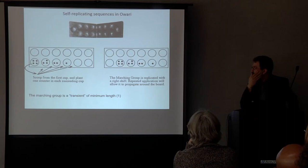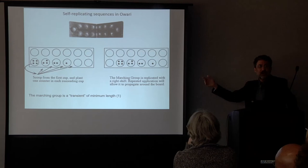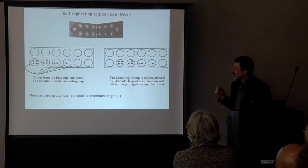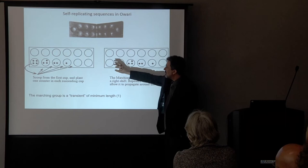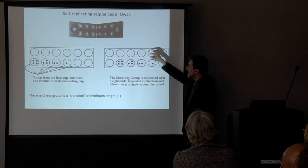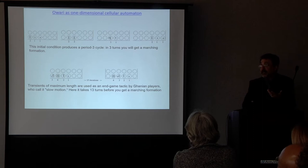Every once in a while I'll give this presentation to mathematicians and they'll challenge me: well, you're drawing pretty pictures, but math is about numbers — is there anything here that's actually numeric? And awari — you know the game Mancala — you put little pebbles in cups. It's a great example of that. You've got what they call the marching group: if you have a 4-3-2-1 sequence, you scoop from the first cup and plant your seeds in the next ones, and you've replicated it, so it goes marching around the board with each move.